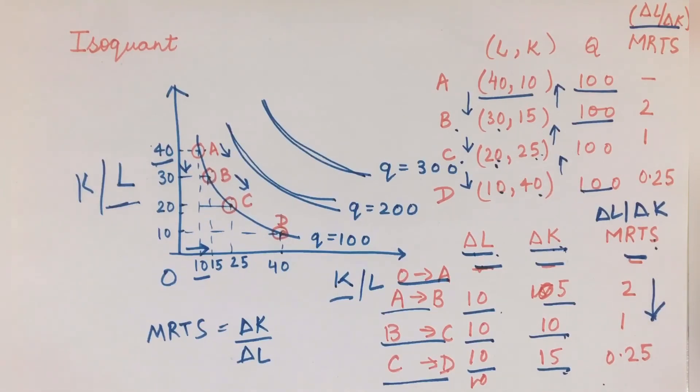That is why isoquants are downward sloping in this case. It simply means that if I'm increasing one input and keep the other input constant, my output would rise. To stop that from rising, I have to reduce the quantity of the other input. So that means isoquants would be downward sloping, and since MRTS is falling, my isoquants would be convex to the origin.